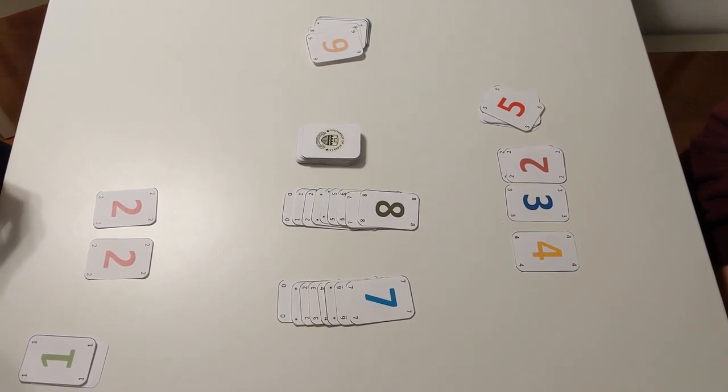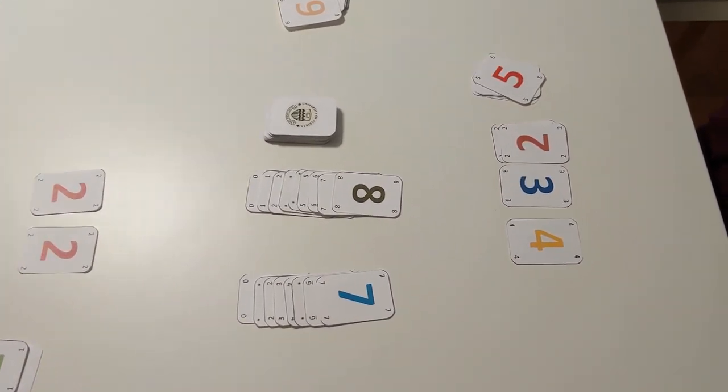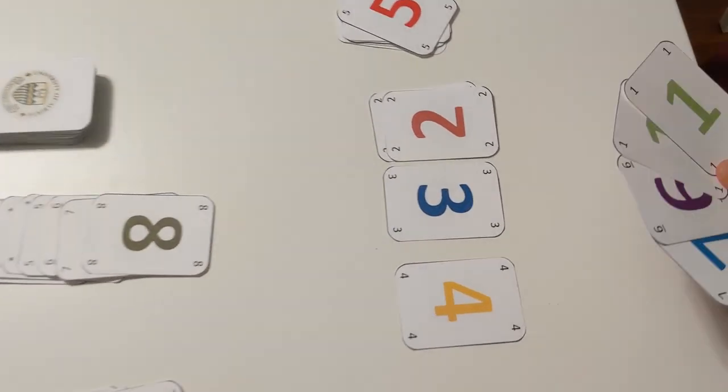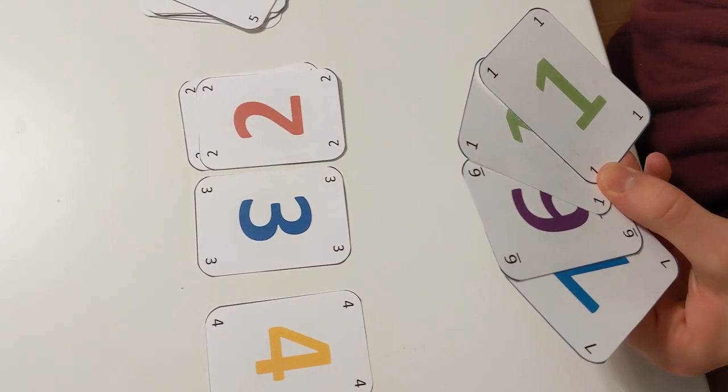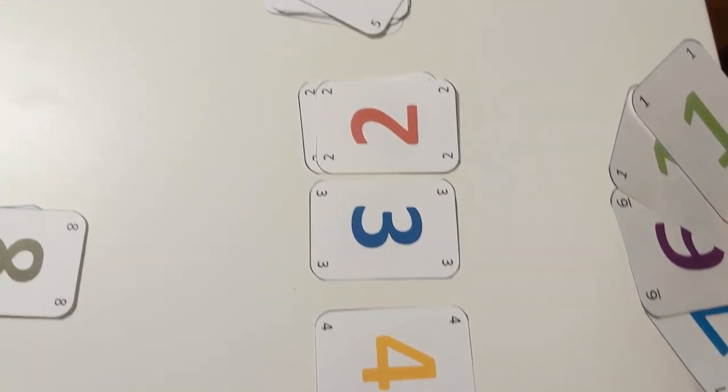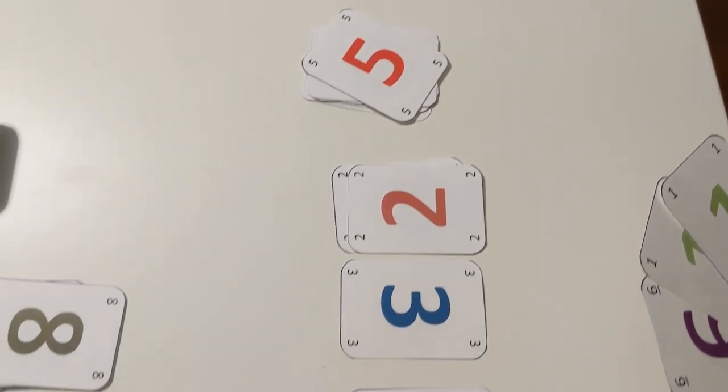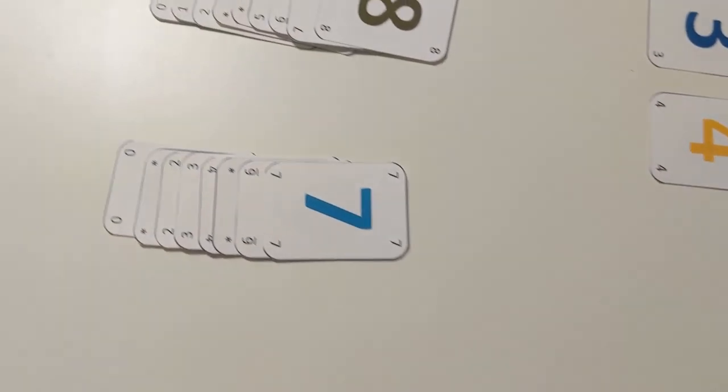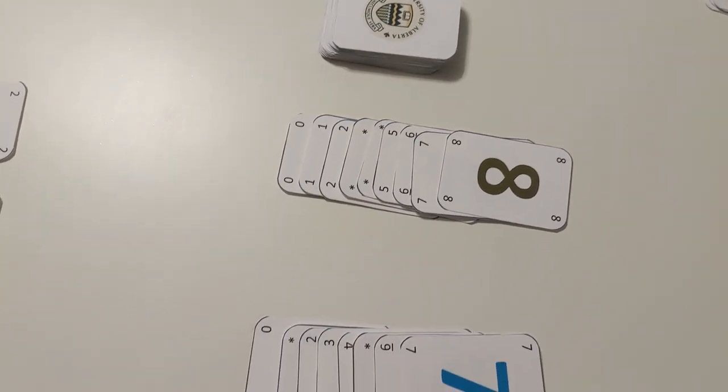Okay, so here we are towards the end of a turn of Mini Spite and Malice. Here you can see the player has four cards, a few discard stacks, and the goal stack. We can see we have two playing stacks.